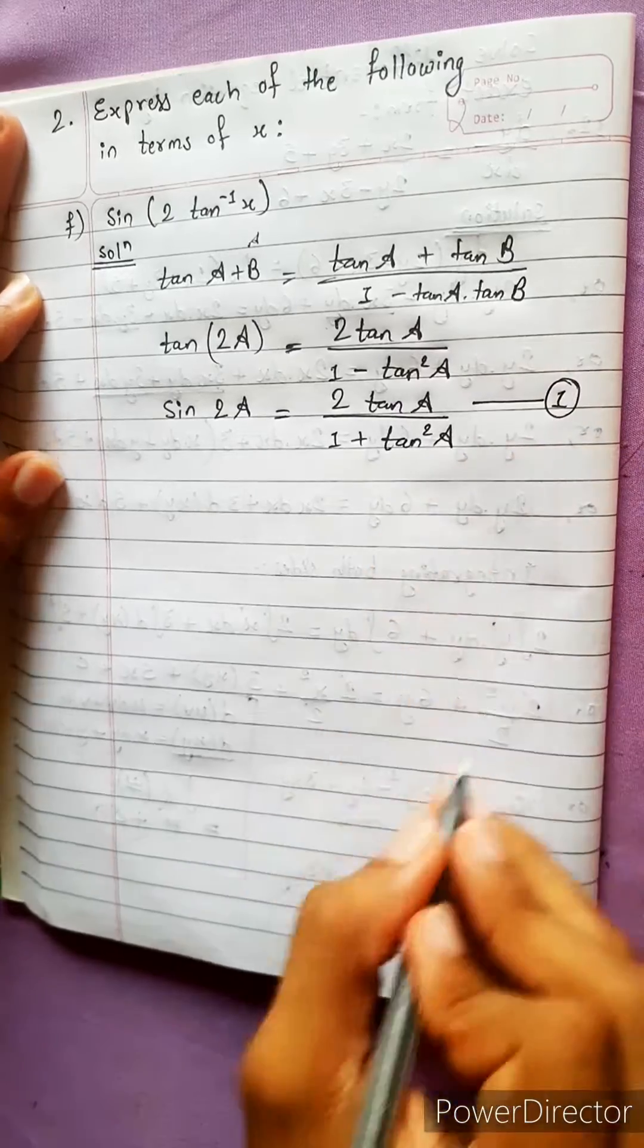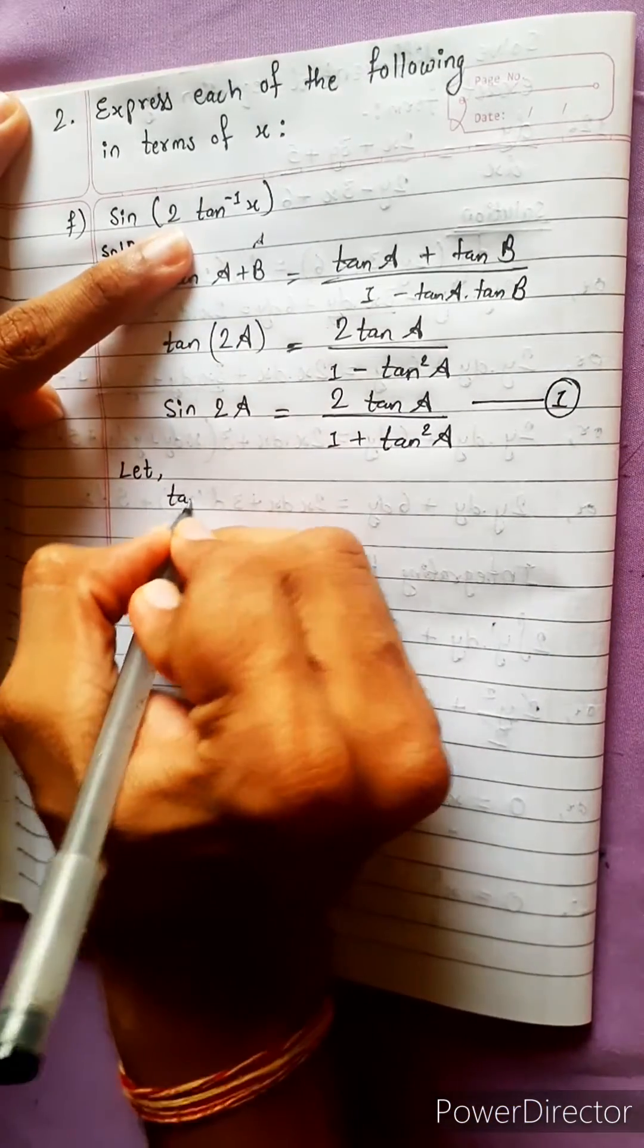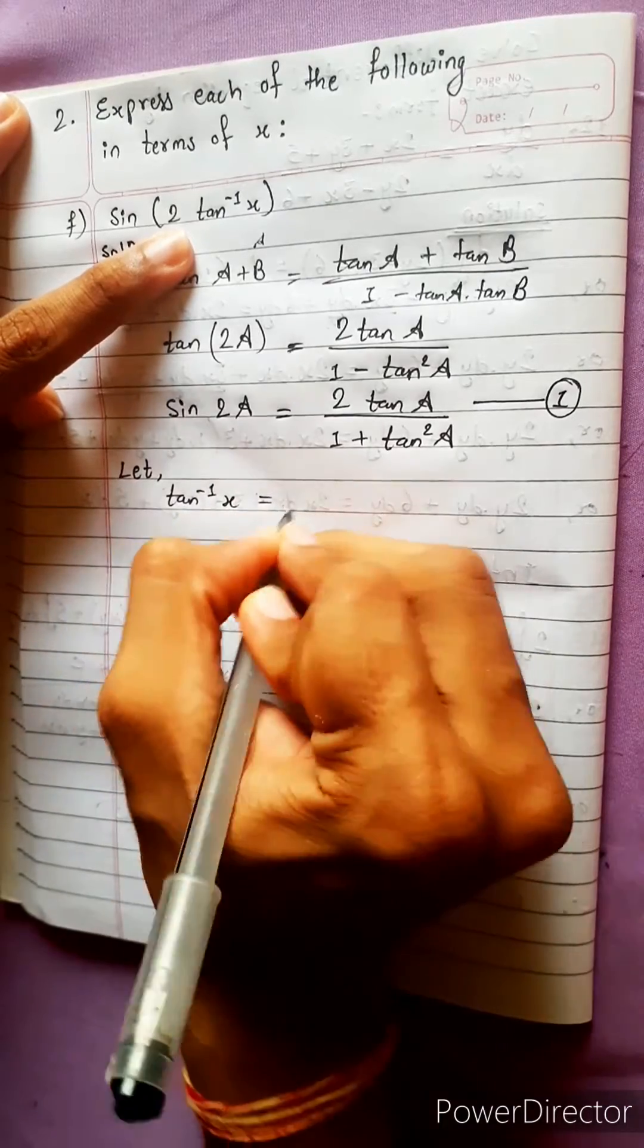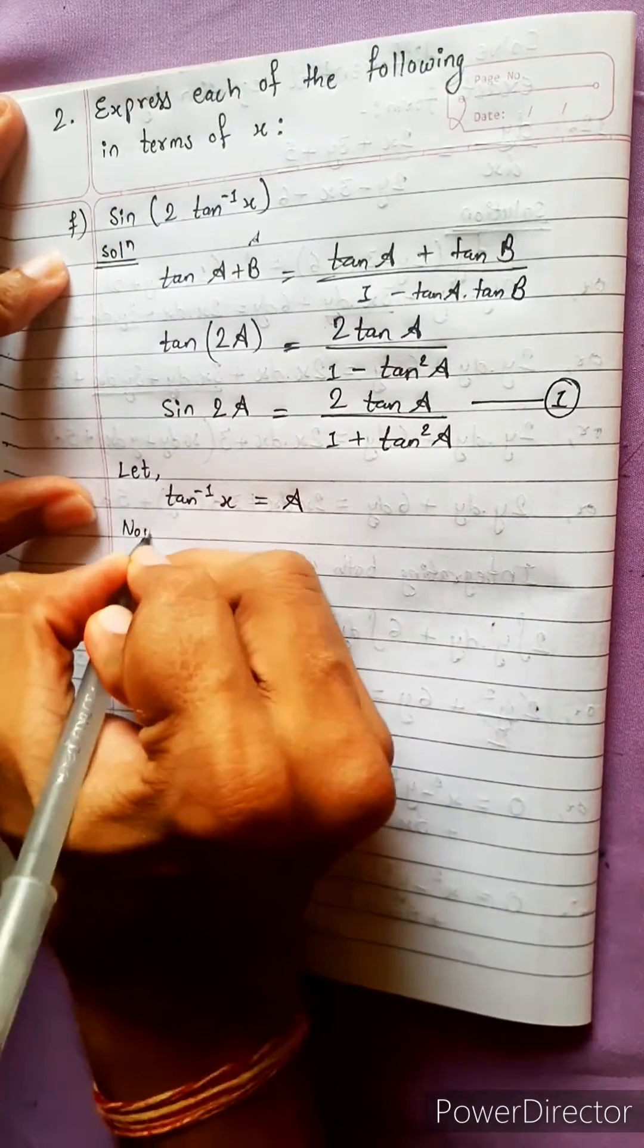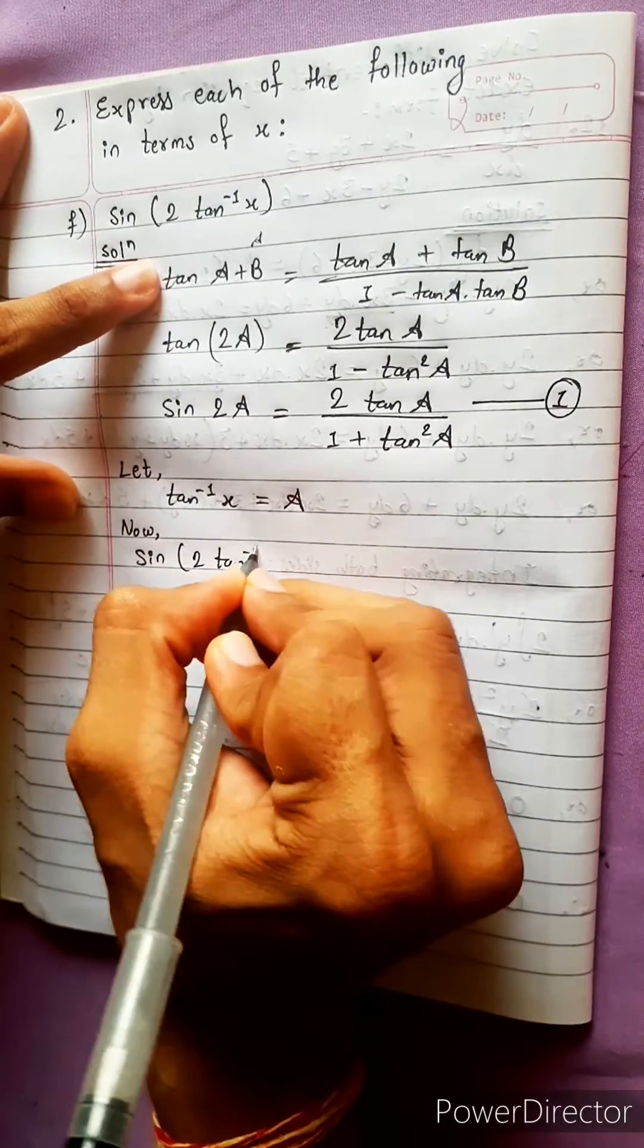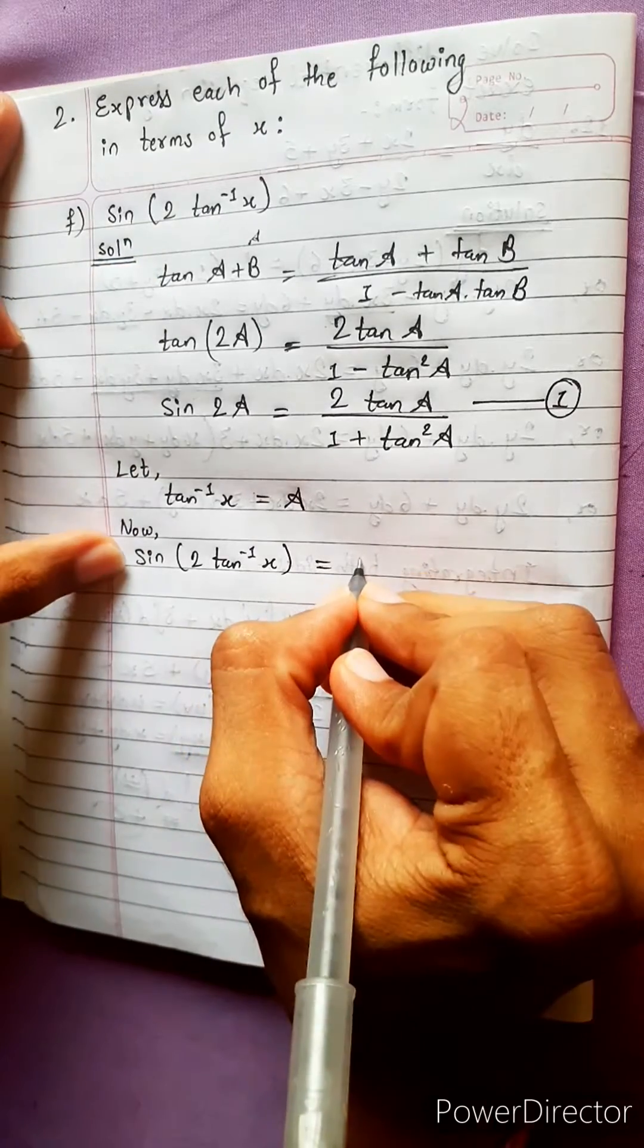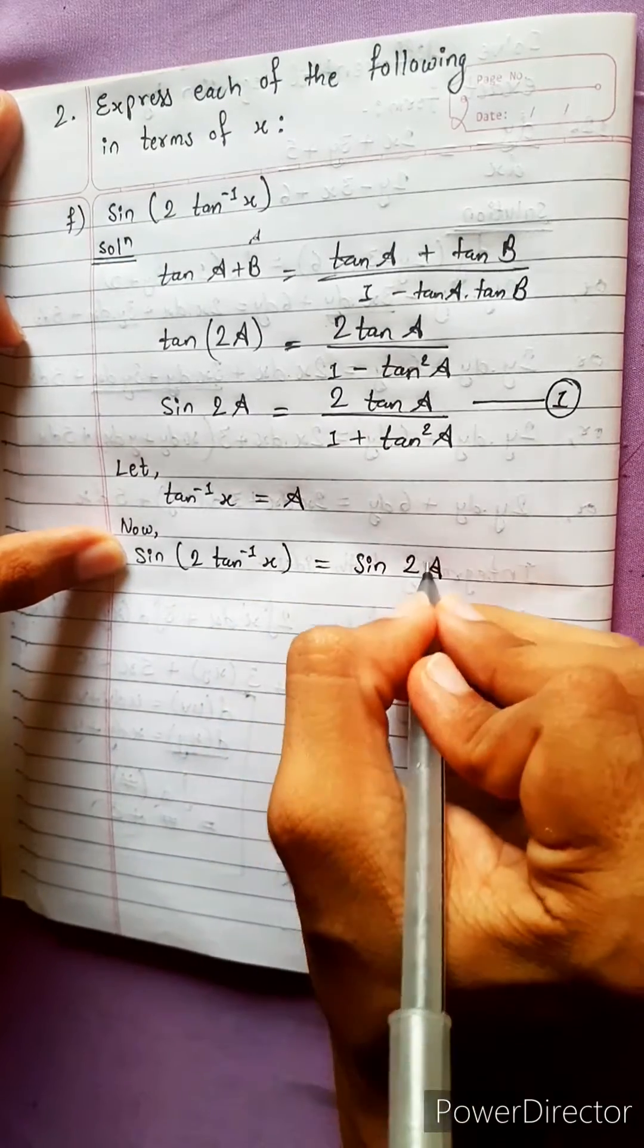This we will need while solving. Now let, let tan inverse x equals to A, we should let this. What is the equation given? Sin(2 tan inverse x) equals to, okay we will write here sin(2A).